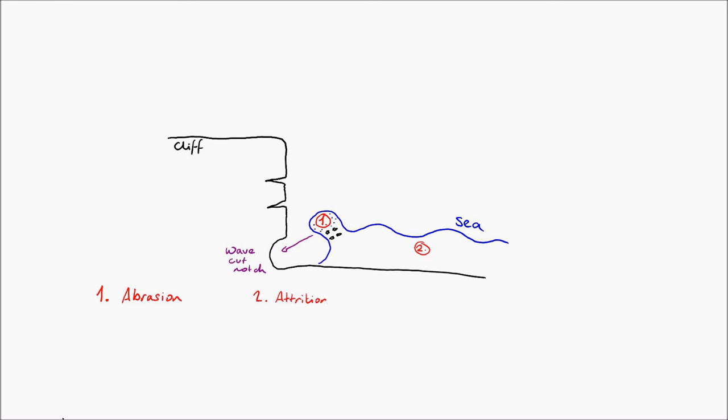Number two. This one is attrition. In attrition you have these jagged large rocks that roll and collide with each other, and what happens is that they knock off the rough edges and they become smaller and they get eroded down. This is attrition.